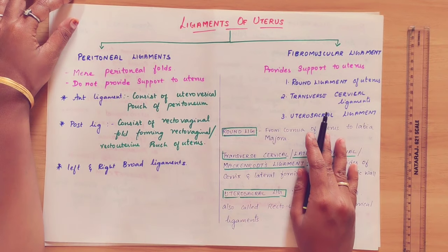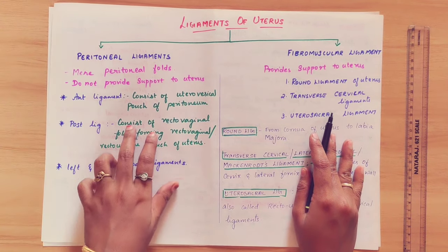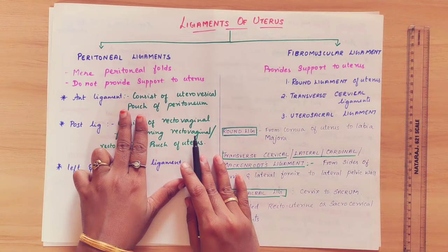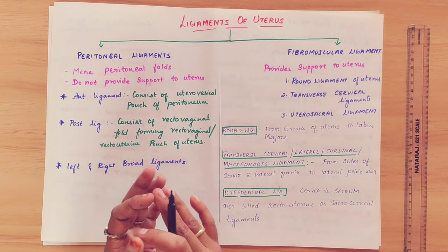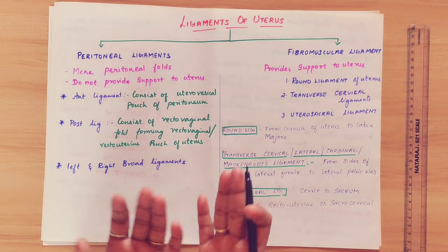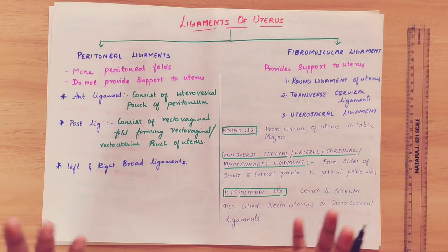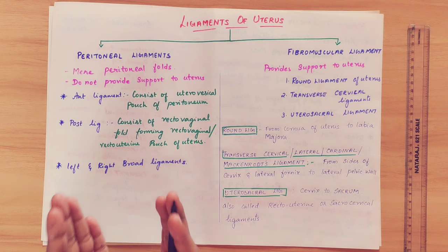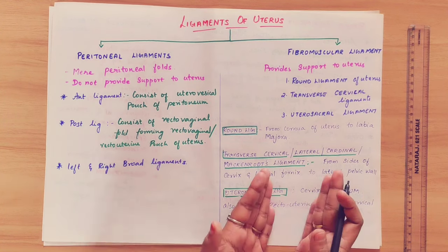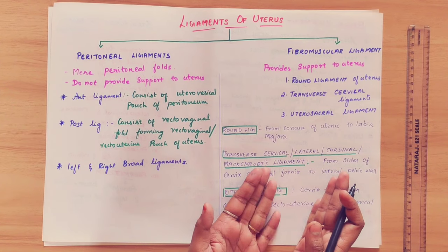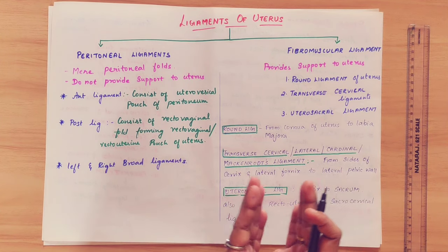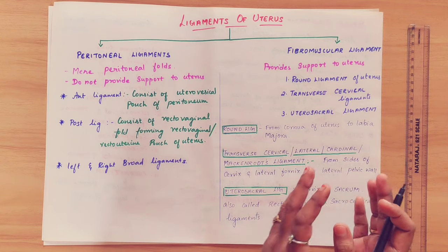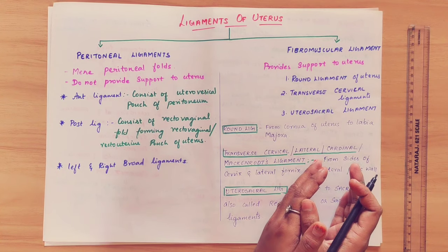There are two categories: peritoneal ligaments and fibromuscular ligaments. Peritoneal ligaments are covered by a serous membrane, which is made of folds. The double layer of these folds forms the peritoneal ligaments. Fibromuscular ligaments support the uterus.